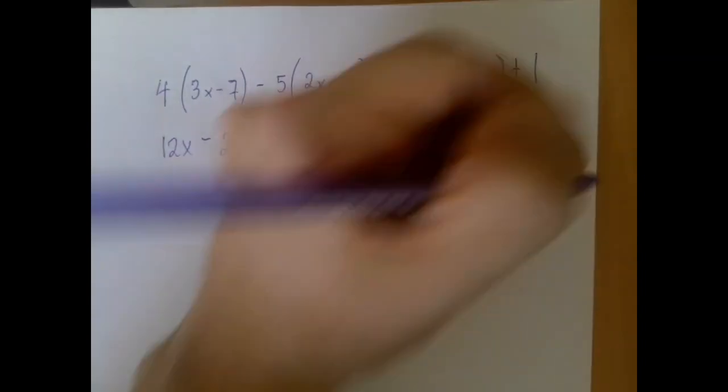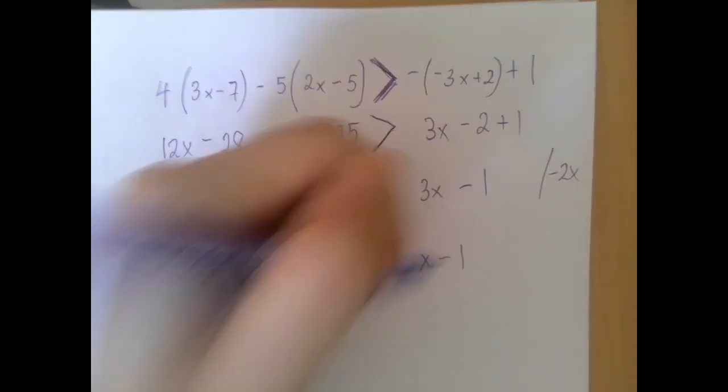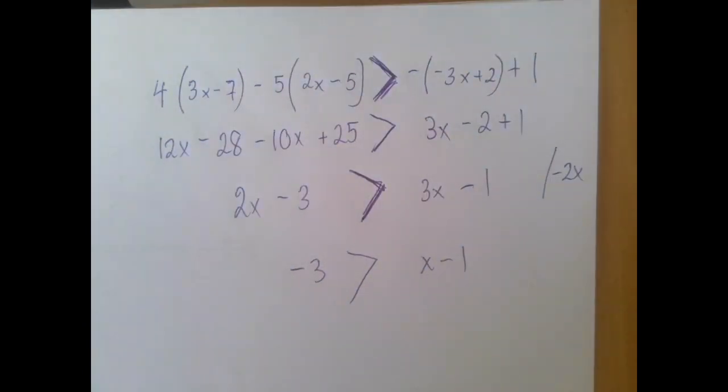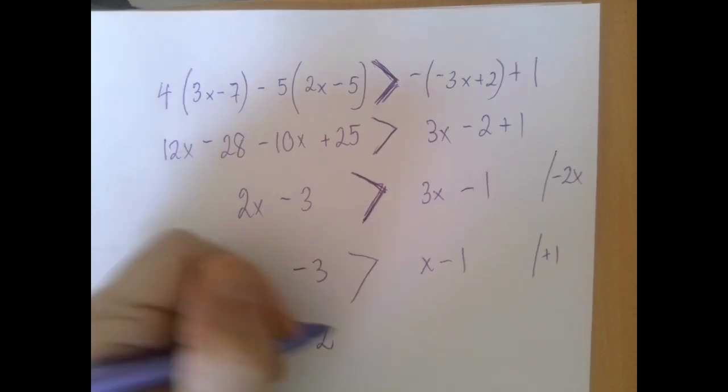So if we subtract 2x from both sides, then we get negative 3 on the left-hand side. 3x becomes just 1x. And so the right-hand side is x minus 1. And now we have to add 1 to both sides. So we get negative 2.